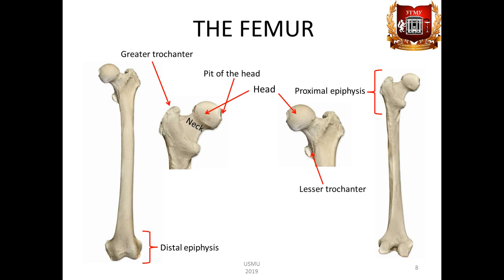The greater trochanter is located at the top and laterally. On its medial surface there is a trochanteric pit, fossa trochanterica. The lesser trochanter is located below the greater trochanter and medially. In front, both trochanters are connected by an inter-trochanteric line, linea intertrochanterica. Behind, there is the inter-trochanteric crest, crista intertrochanterica.